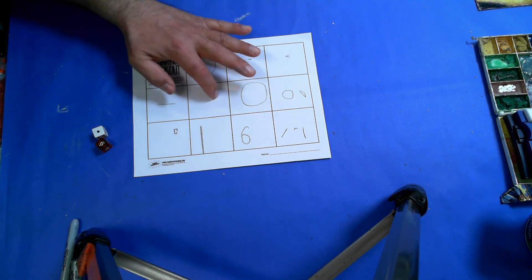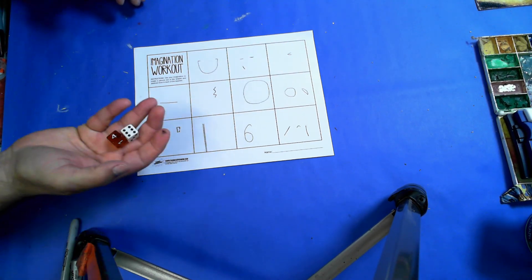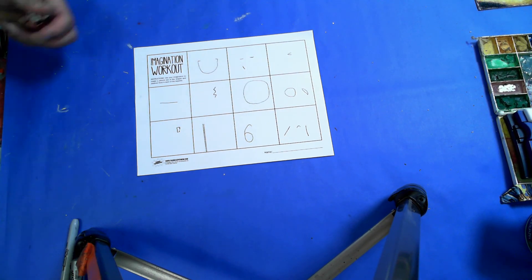So, we have 1, 2, 3, 4, 5, 6, 7, 8, 9, 10, 11, and we could just re-roll the 12s.